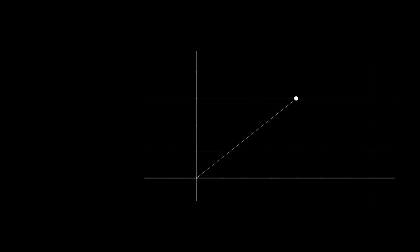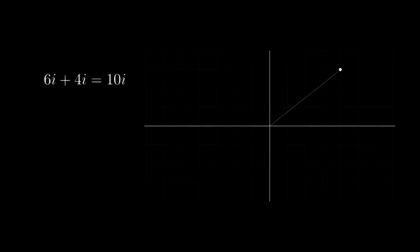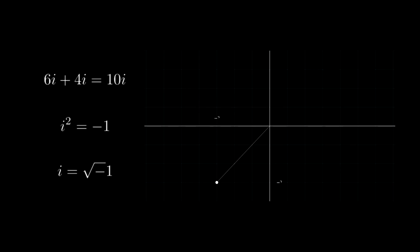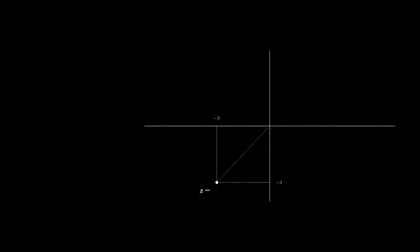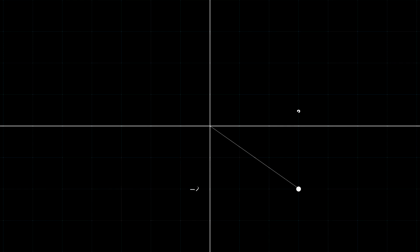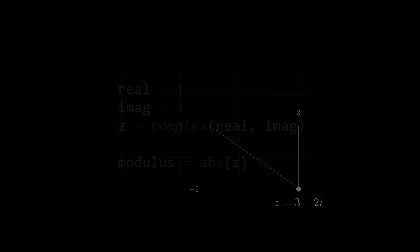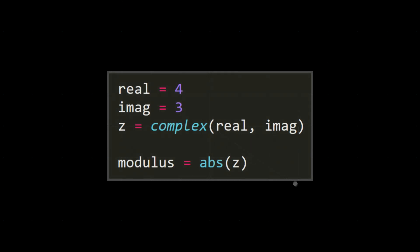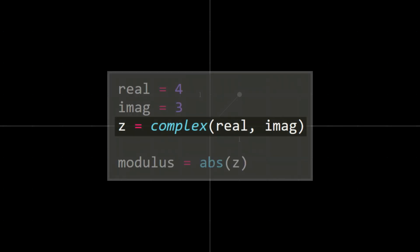When manipulating complex numbers, we can treat the i as a variable. When there is an i squared, we can convert it to minus 1. Or you can think of i as the square root of minus 1. Translating complex numbers to Python is not too difficult, as it has inbuilt compatibility. For example, we can initialize complex numbers using this syntax, and we can find the modulus of a complex number using this.